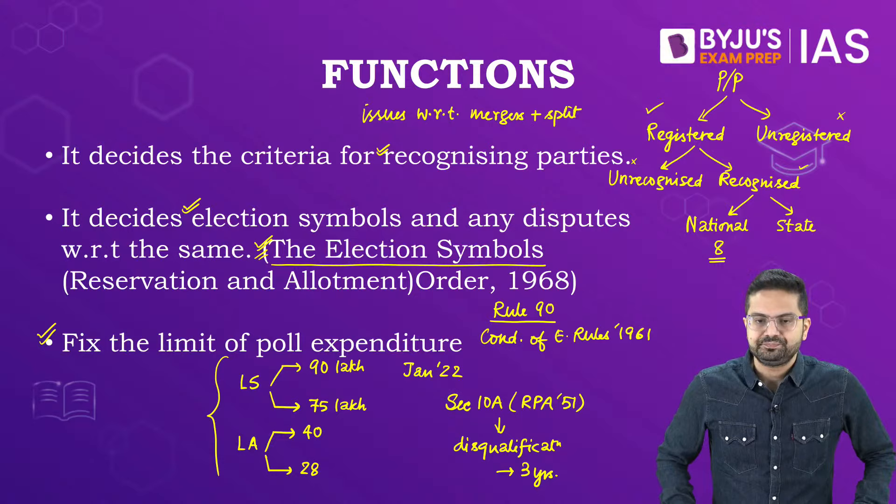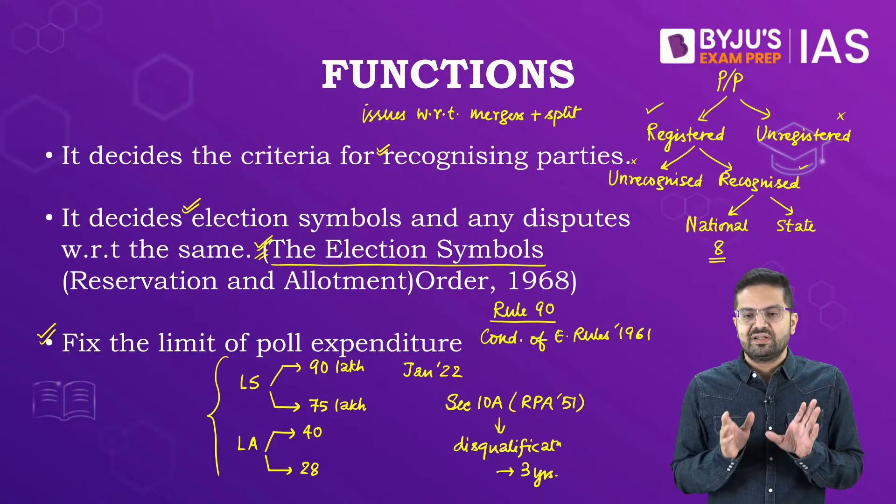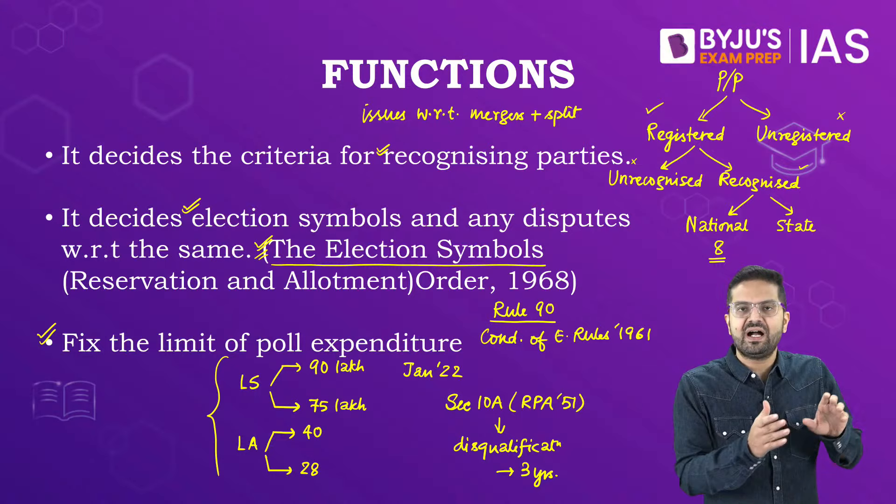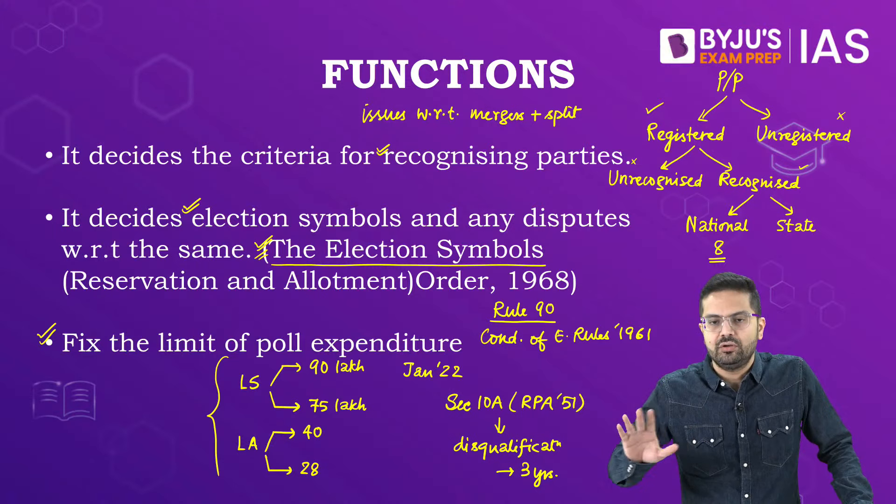Question on State Election Commission: The State Election Commissioner is an independent constitutional body under Article 243K. They do not work as per directives of the ECI — not at all.